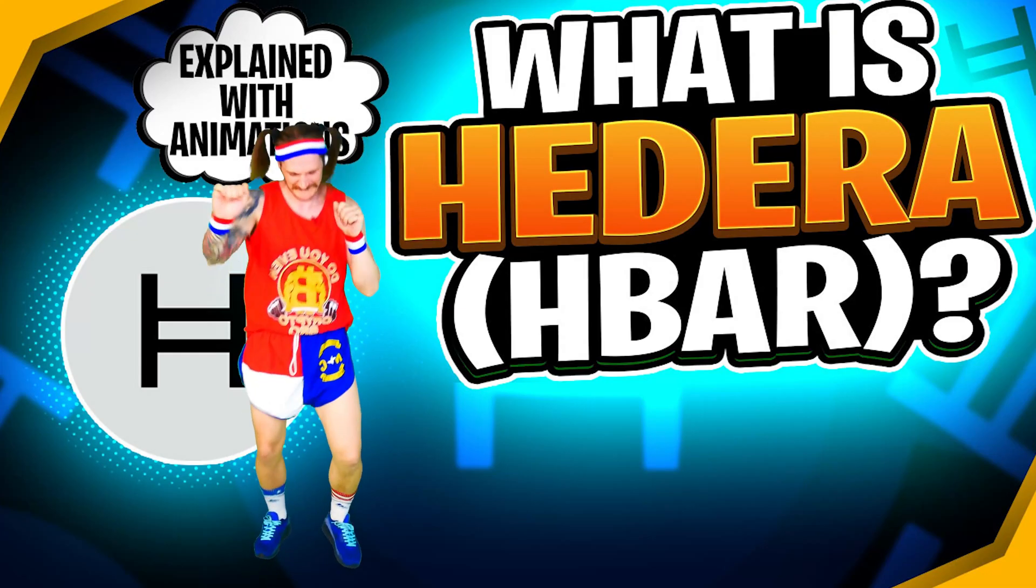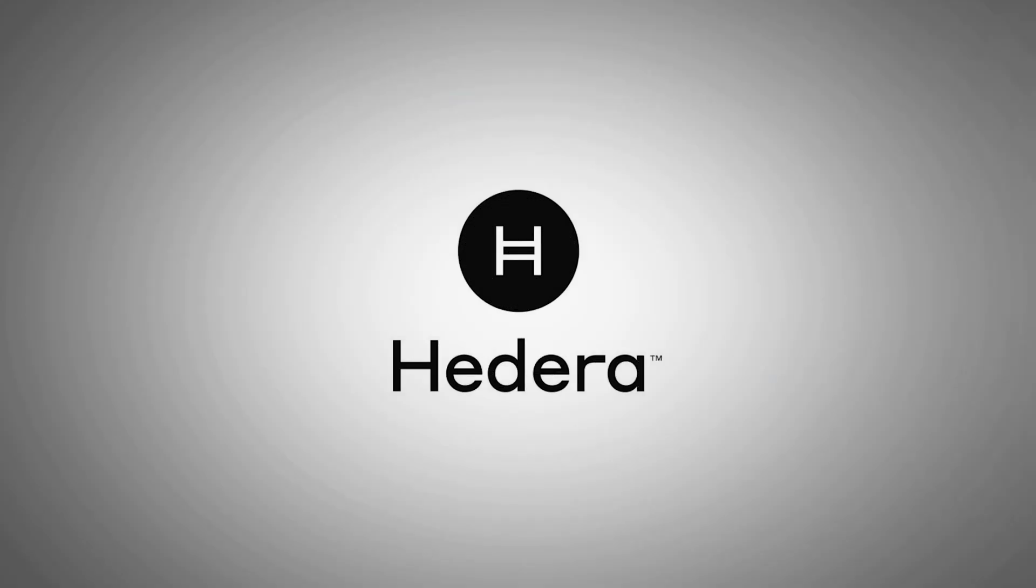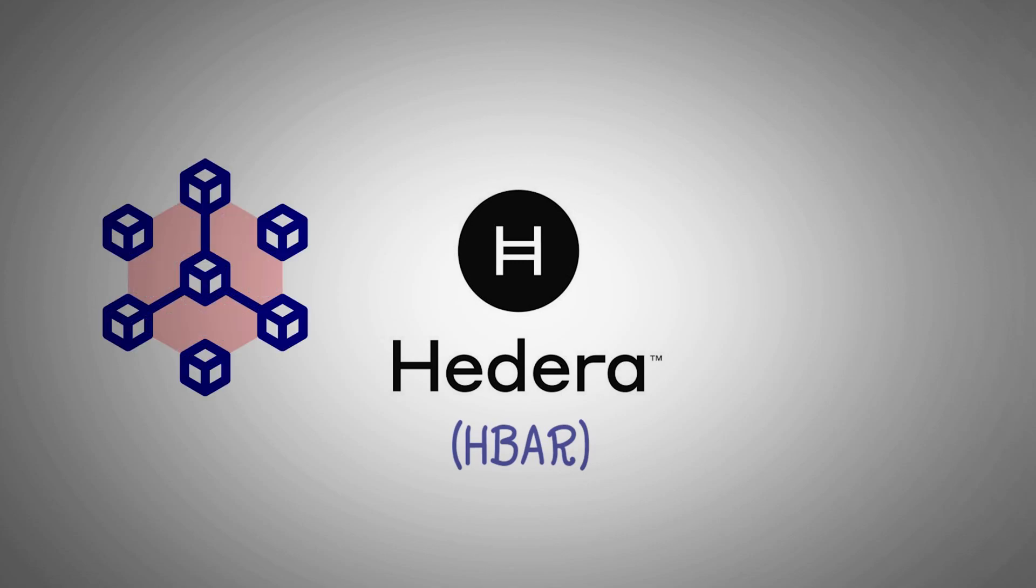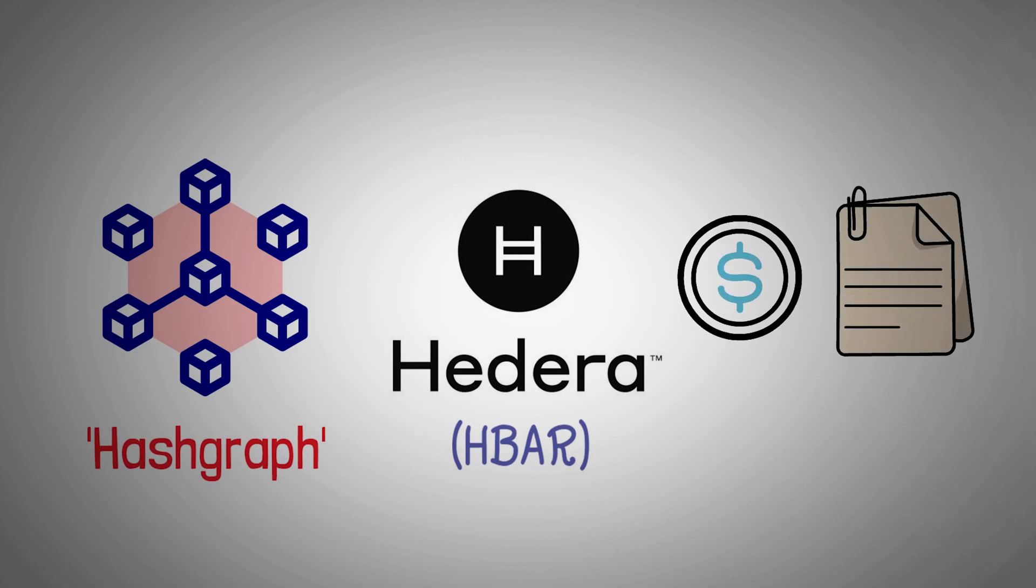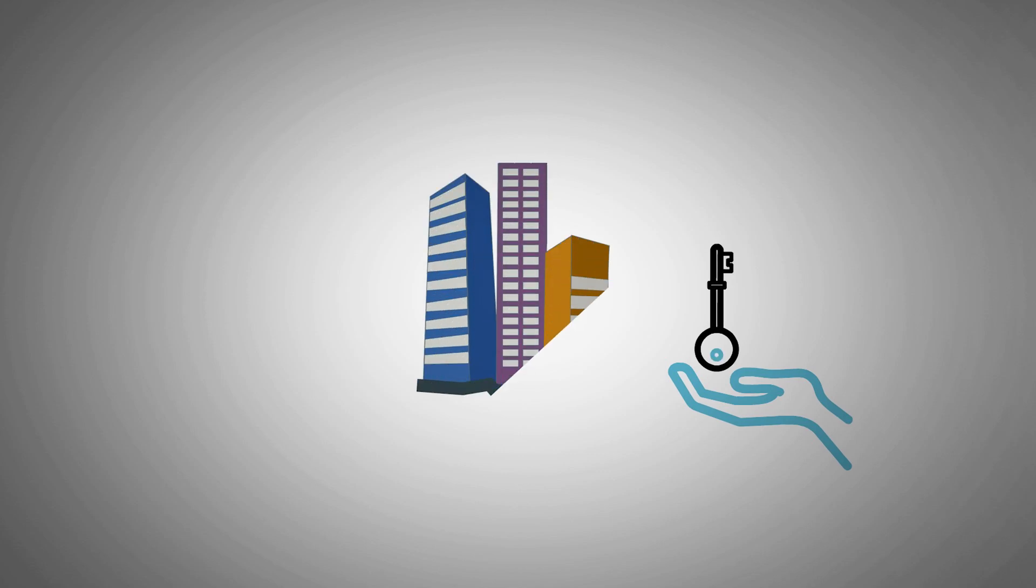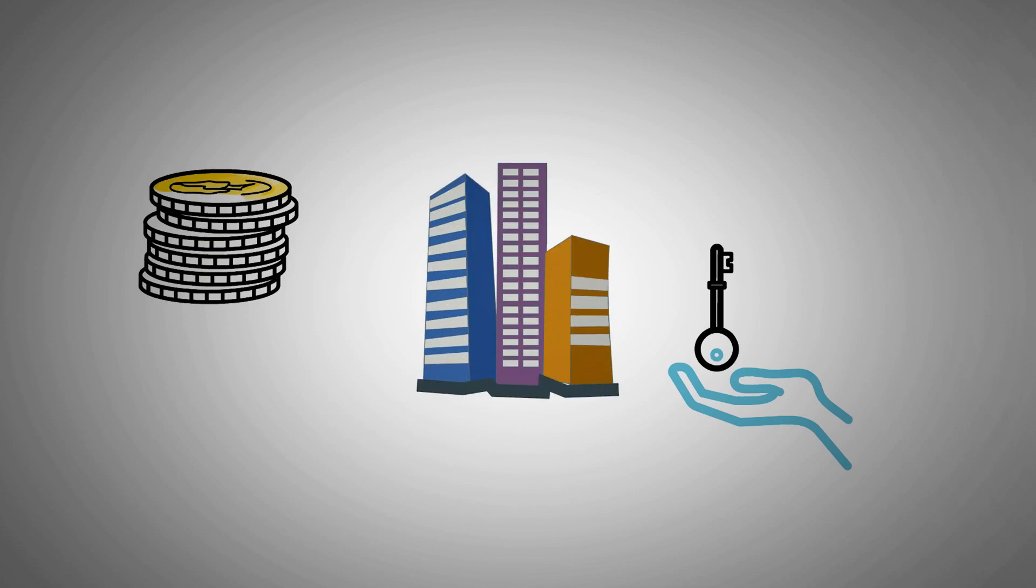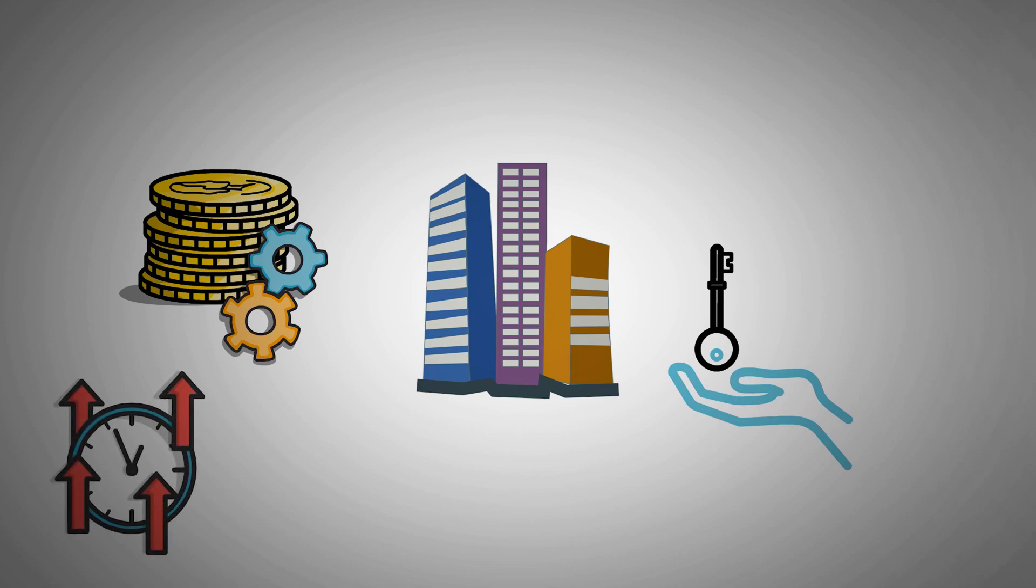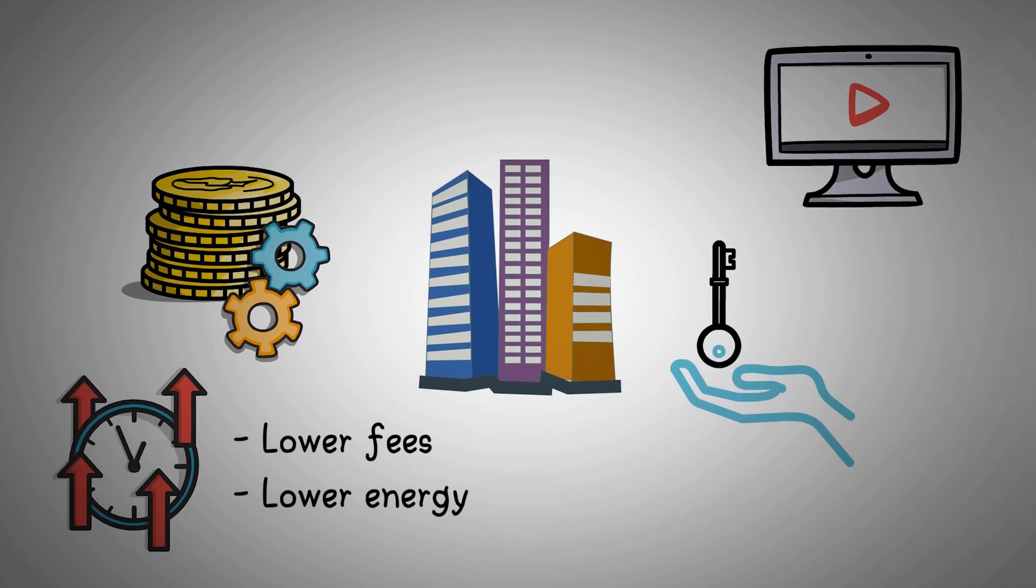Hedera or HBAR explained. Hedera or HBAR is a cryptocurrency that runs on a blockchain known as Hashgraph, which enables cryptocurrencies, smart contracts, and distributed apps. Hedera is owned and backed by some of the biggest corporations in the world and uses a different version of the proof of stake consensus algorithm to offer faster transaction times, lower fees, and lower energy use compared to other cryptocurrencies.